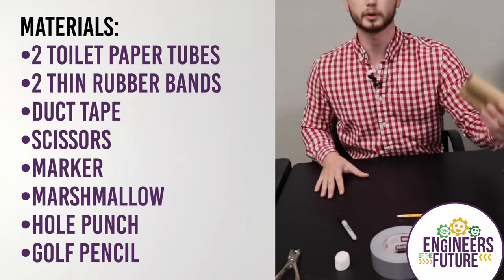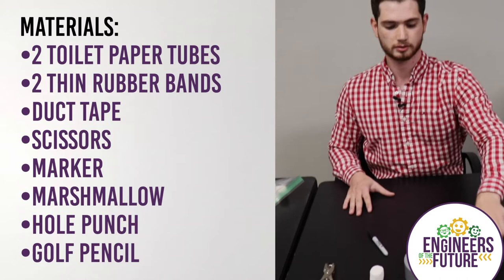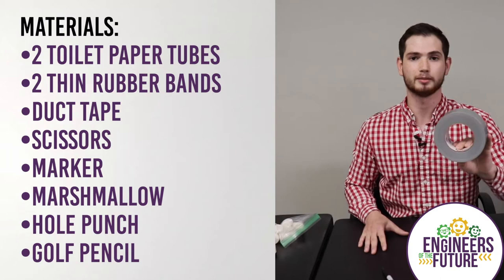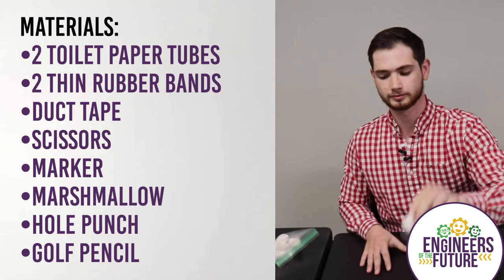So just to go through the supplies that we're going to need in order to complete this project we have two toilet paper rolls, two thin rubber bands, some duct tape. You're not going to need a whole roll like I have today but some strips of duct tape will work. Of course the most important part, a marshmallow, a hole punch, a pencil, and a marker.